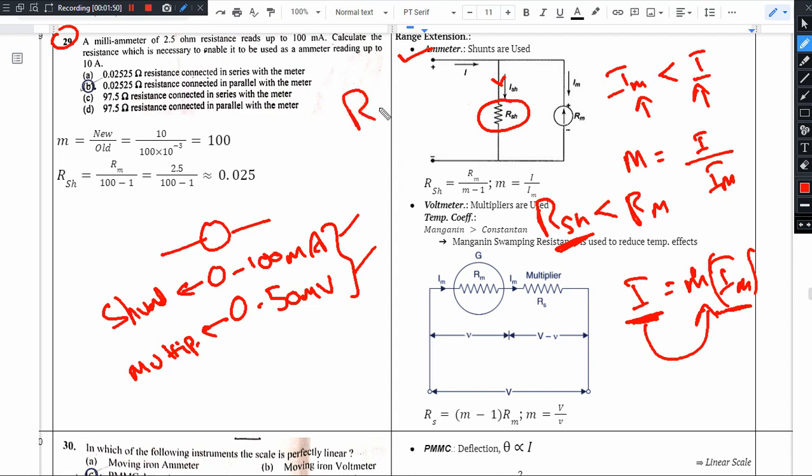Obviously you should know that Rm must be divided with m minus 1. M is always greater than 1, so R shunt is minimum. R shunt equals Rm divided by m minus 1. Shunt calculation will be denominator, multiplier calculation means voltmeter range extension will be numerator.